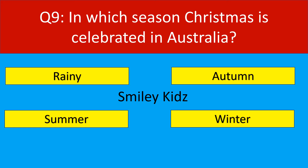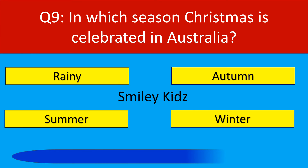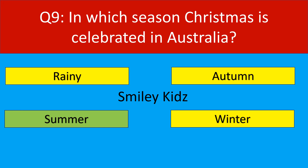Question number 9. In which season is Christmas celebrated in Australia? Your options are rainy, autumn, summer, winter. Your time starts now. Your time is up. The correct answer is summer. Christmas is celebrated in Australia in summer season.